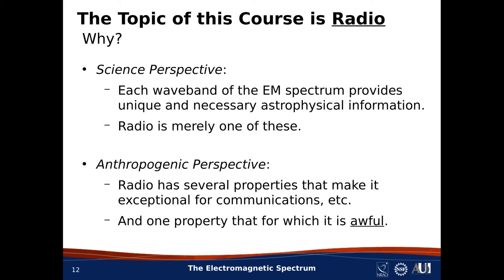Now, since you know that there are many forms of EM radiation beyond radio, you might fairly ask why this course is focused on radio. From the science perspective, every portion of the EM spectrum provides unique and valuable astrophysical information, and radio is merely one such band. From the perspective of other users of the EM spectrum, however, radio has many properties which make it uniquely well-suited for wireless communications — though it also has one property that makes it awful for wireless communications. The reason we run into contention between science and other users is because the radio spectrum is uniquely useful for communications, which creates interference for radio astronomy, leading to the need to carefully manage this part of the EM spectrum.